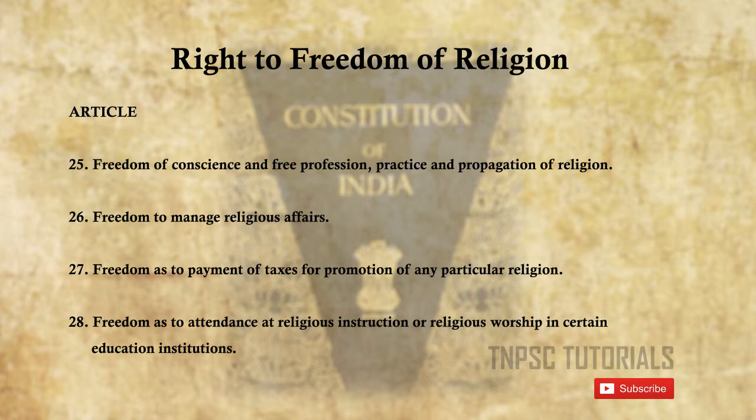Right to Freedom of Religion covers Articles 25 to 28. Article 25 deals with freedom of conscience and the right to freely profess, practice, and propagate any religion. Article 26 covers freedom to manage religious affairs. Article 27 deals with freedom from payment of taxes for promotion of any religion. Article 28 deals with freedom from attending religious instruction or worship in certain educational institutions.